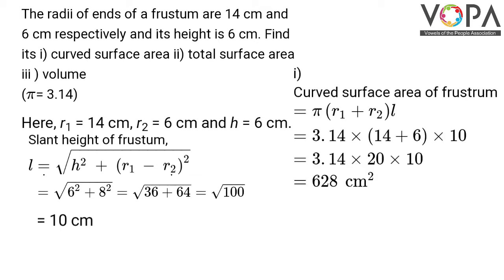Let us now find the curved surface area of frustum. It has formula π(R1 plus R2) into L. That is 3.14 into (14 plus 6) into 10, which equals 3.14 into 20 into 10, giving you 628 cm squared. So that's the curved surface area of frustum.